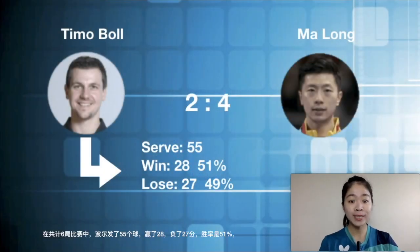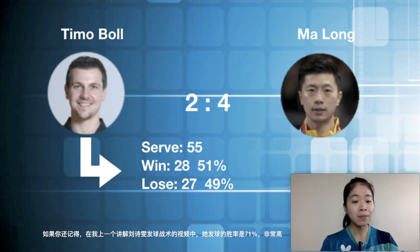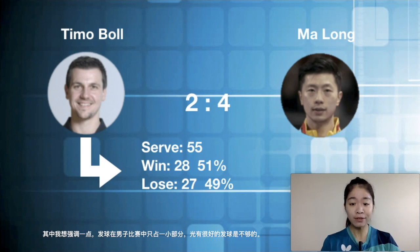First of all, I will give you the data reports of each game based on Timo Ball's serve performance. In total six games, Timo served 55 balls, won 28 and lost 27 — a winning percentage of 51%. For comparison, Liu Shiwen's serve winning percentage was 71%, which is really high. But one thing I want to emphasize: serve is just one small factor determining the result of a match in men's game, meaning a great serve alone is not enough to beat top male players.